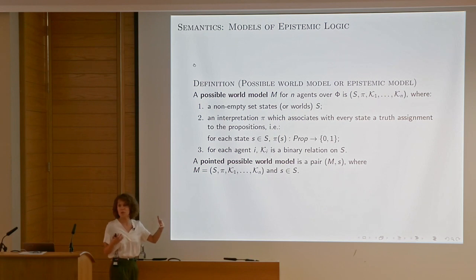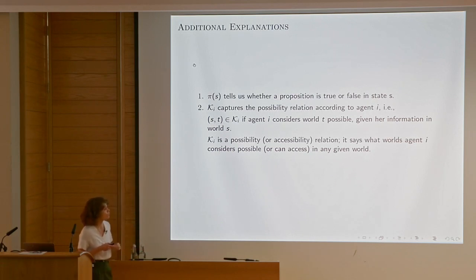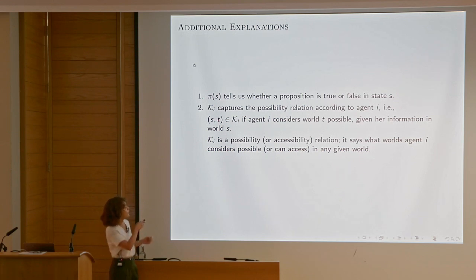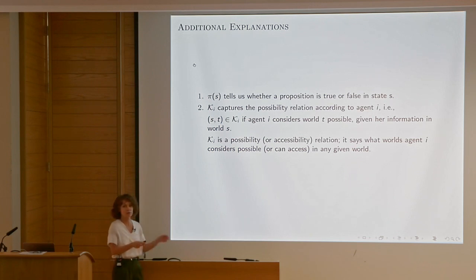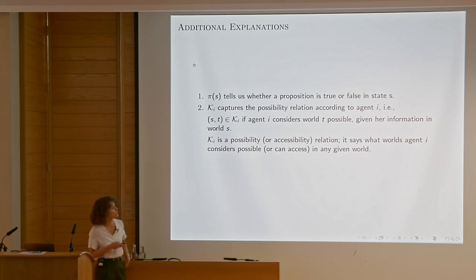I'm trying to explain it intuitively, but this would be the formal way to put it together. φ(s) tells us whether a proposition is true or false in state s. K_i captures the possibility relation according to agent i — a pair of states is in this relation if agent i considers world t possible given her information in world s. K_i is thus a possibility or accessibility relation: it says what worlds agent i considers possible or can access in any given world.